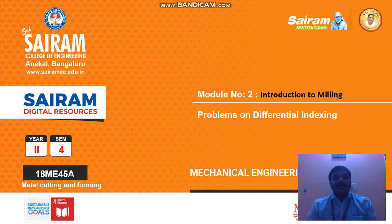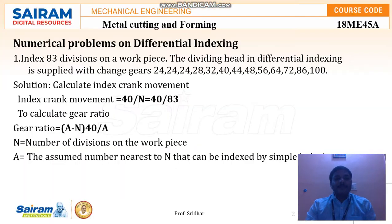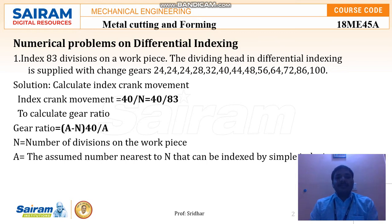Now we are going to see problems on differential indexing — how we fix the indexing plate, how we calculate the gears, how many drivers or driven gears are required, and whether an ideal gear is required. We can find this out using the differential indexing method. The indexing is nothing but having an index plate on the milling machine in order to perform the gear cutting machining process. First we need to fix the index on the index plate.